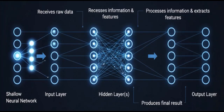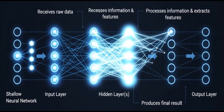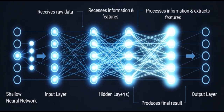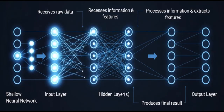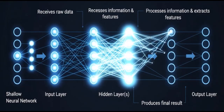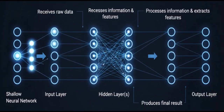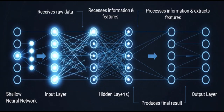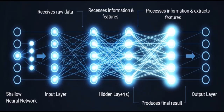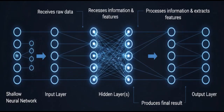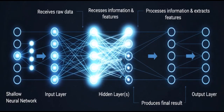First, on the far left, we have the input layer — this is where the raw data enters the network. If our network is designed to recognize an image, for example, the input layer would receive the individual pixel values of that image. If it's processing text, it might receive numerical representations of words.